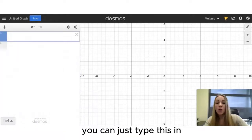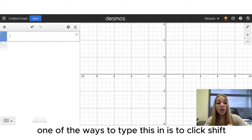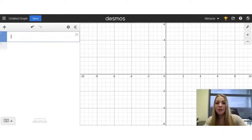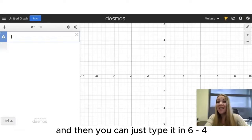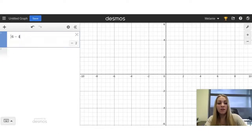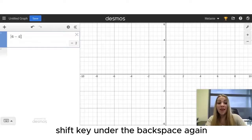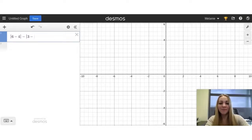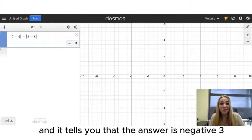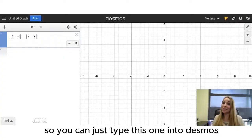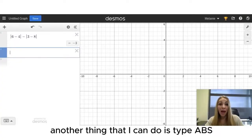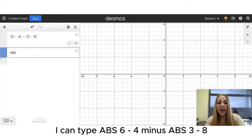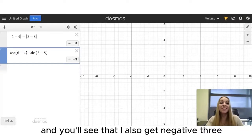If you don't remember anything about absolute value, you can just type this in. One of the ways to type this in is to click shift and the key that's underneath your backspace. That gives you that vertical absolute value bar. And then you can just type it in. 6 minus 4. Shift key under the backspace again. Minus shift key under the backspace again. And it tells you that the answer is negative 3. So you can just type this one into Desmos. Another thing that I can do is type ABS for absolute value bar. I can type ABS 6 minus 4 minus ABS 3 minus 8. And you'll see that I also get negative 3.